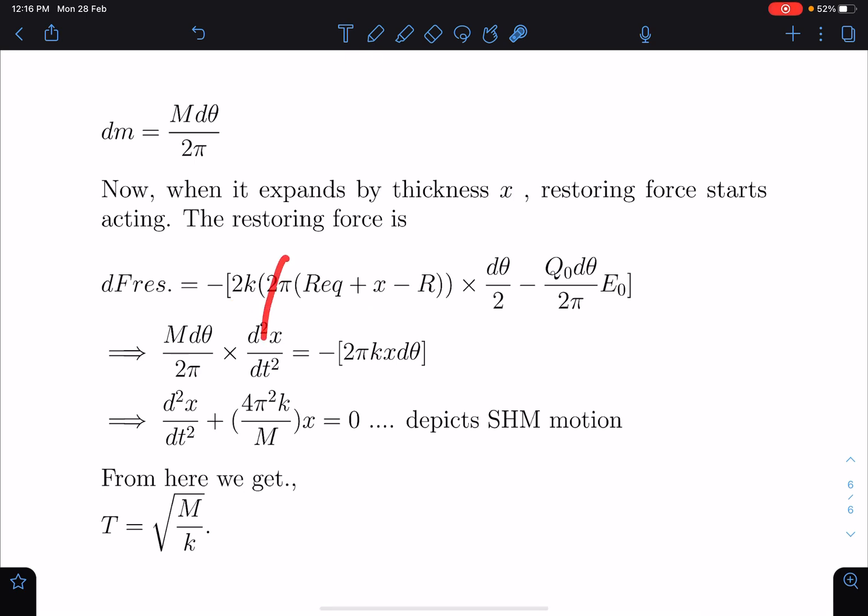Now from here I am getting a simple harmonic motion: d²x/dt² plus (4π²k/M)·x, and this is the ω² value. So 2π/ω, if we check, we are going to get T equals √(M/k).